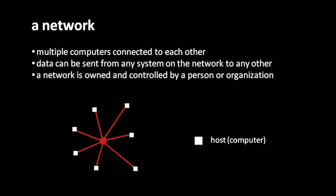Before you can understand what the internet is, you need to understand what a network is. A computer network is any arrangement where you have multiple computers all connected to each other by some means, such that each computer on the network can send data to any other. In our diagram, we have a network of several computers, each represented as a little white square. In the terminology of networks, we usually call a computer a host. Quite importantly, a network is something owned and operated by one entity — one person or one organization. All of the systems on the network, all of the hosts, and the means to connect them are all controlled by one entity.